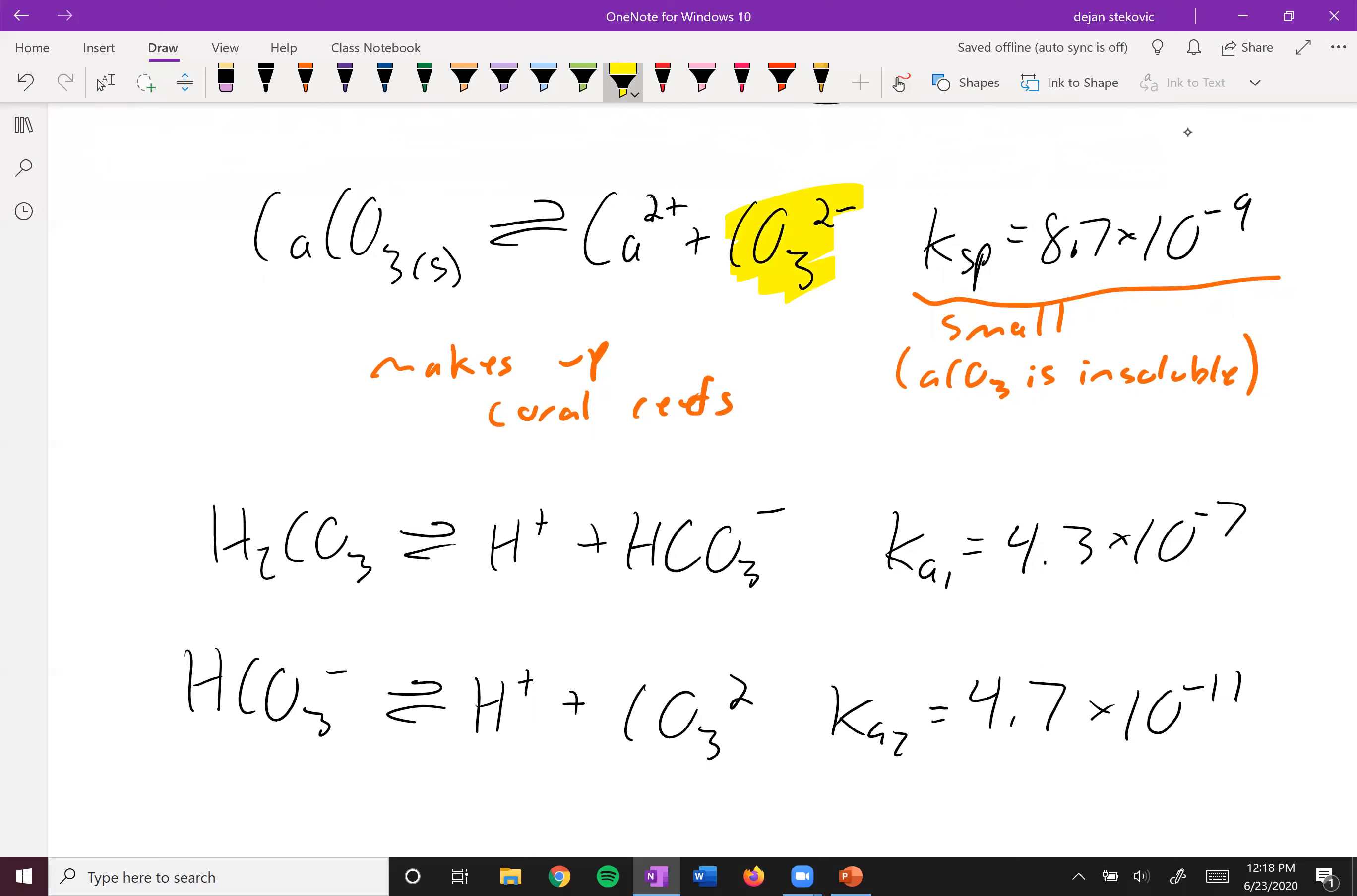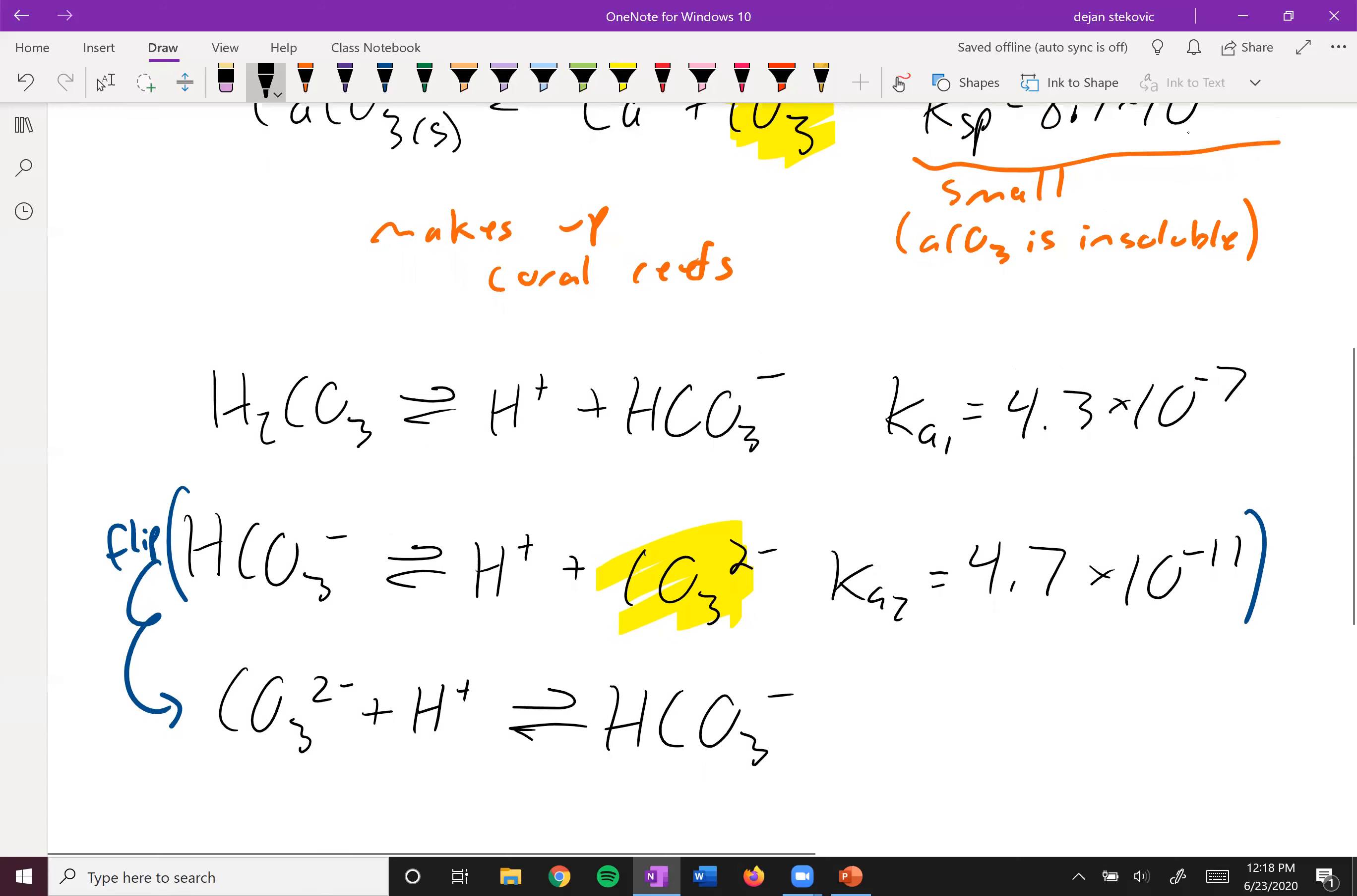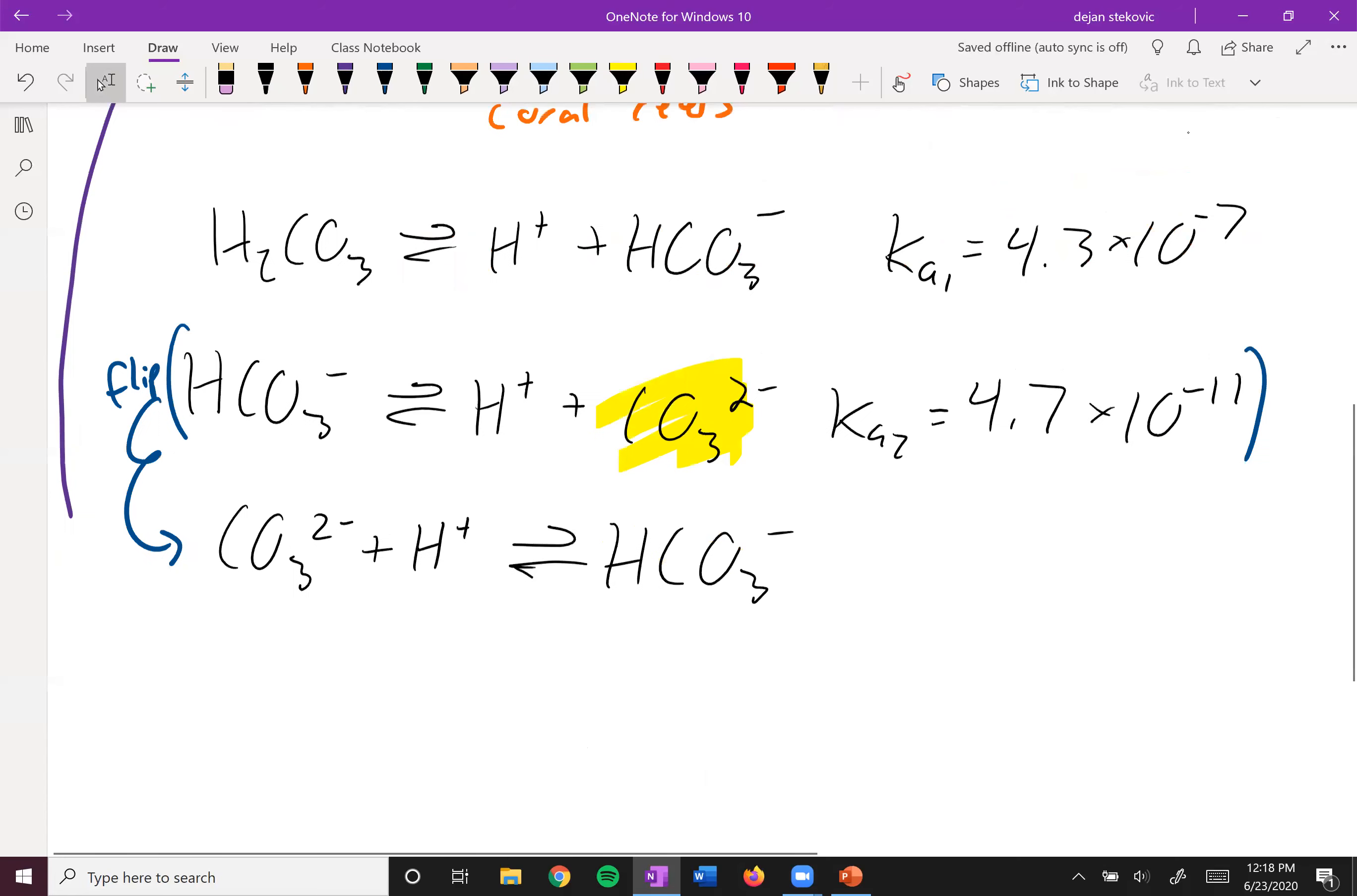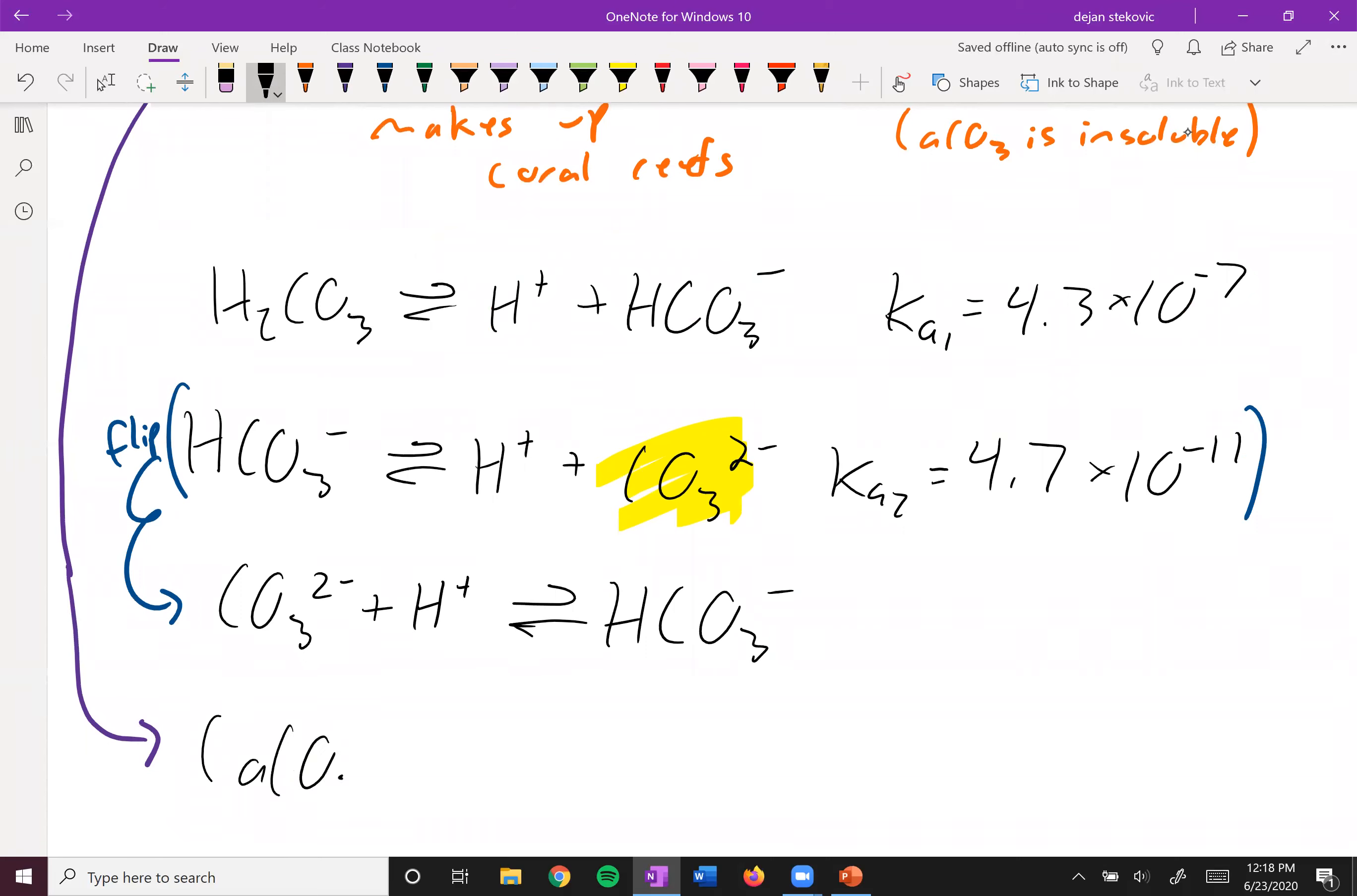And so here we see a common ion with this carbonate here. Both of these two equations have carbonate in them, so let's see what happens when we flip this equation: CO₃²⁻ plus H⁺ forms HCO₃⁻, and then we're going to add it to this equation up here.